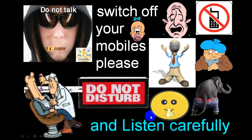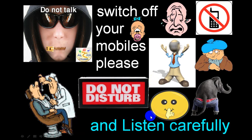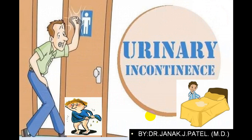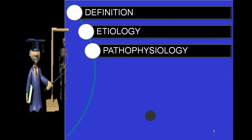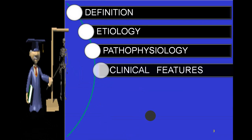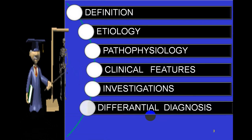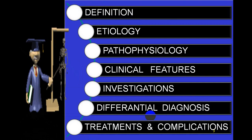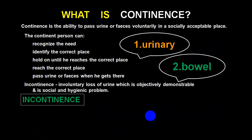Today we'll be talking on the topic of incontinence, or urinary incontinence. We'll be talking under the headings of definition, etiology, pathophysiology, clinical features, investigations, differential diagnosis, treatment, and complications. Before we come to incontinence, what is continence? Continence means the ability to pass urine or feces voluntarily in a socially acceptable place.